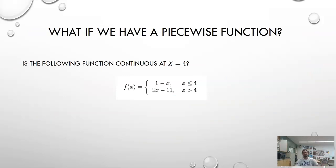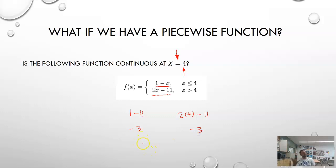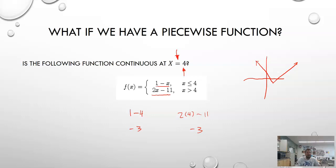Lastly, if we have a piecewise function and want to know if it's continuous at x equals 4 — in other words, if the function is continuous as we transition from one piece to another — we look at the two separate functions and insert the x value into each. It's almost like doing a one-handed limit for both sides. In both cases, evaluating at x equals 4 gives negative 3, meaning as we transition from one function to the other they meet up, so we don't have to lift our pencil. Continuity is not incredibly difficult, but it's very important as we move forward.